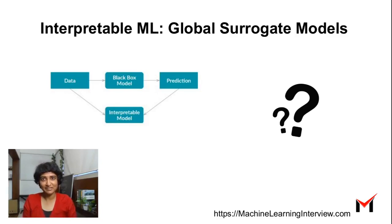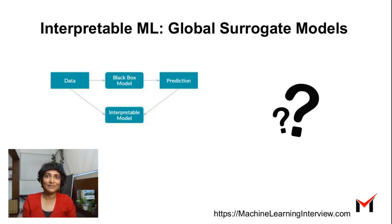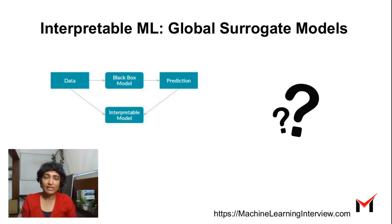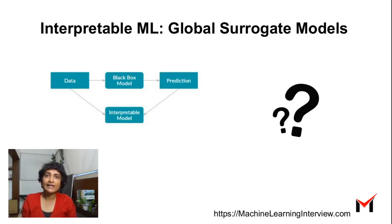Interpretable machine learning — global surrogate models. By interpretable machine learning, we mean the ability to explain why an ML model came up with the outcome that it did.